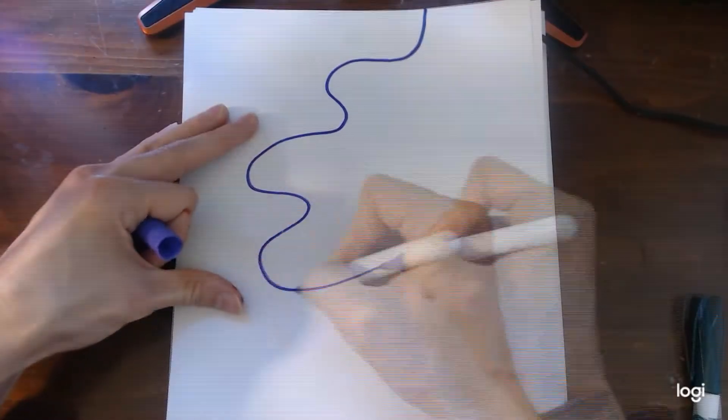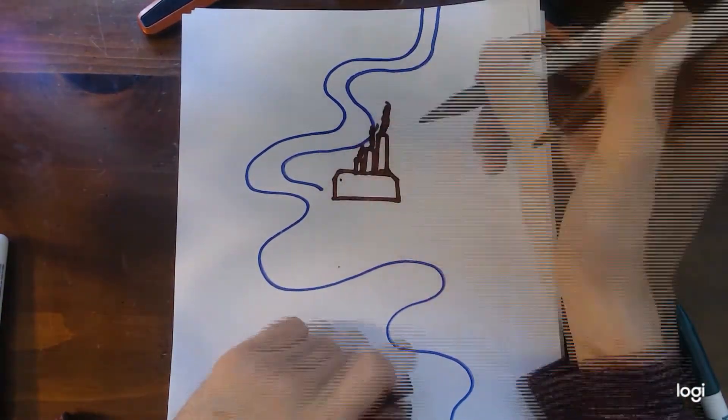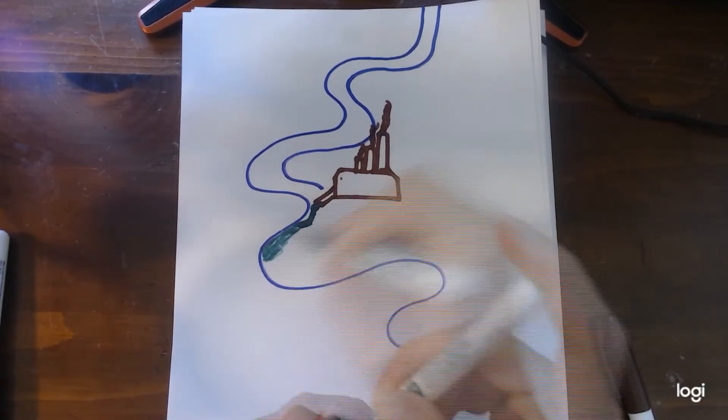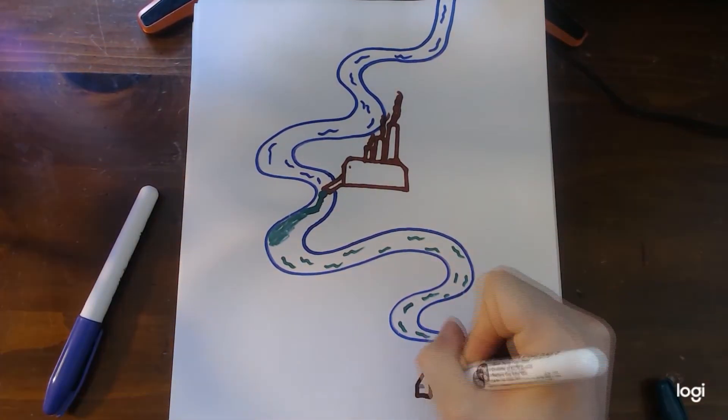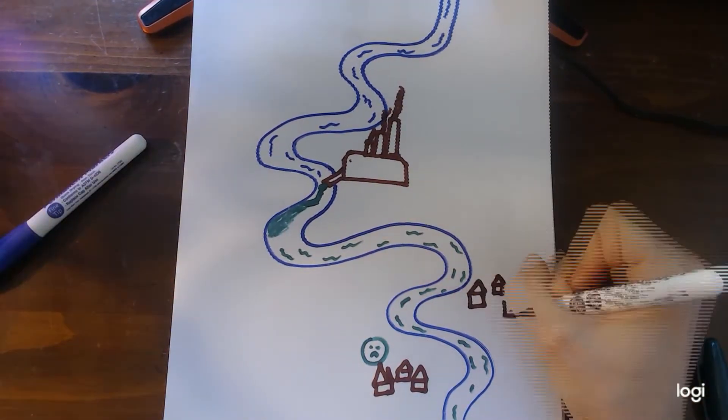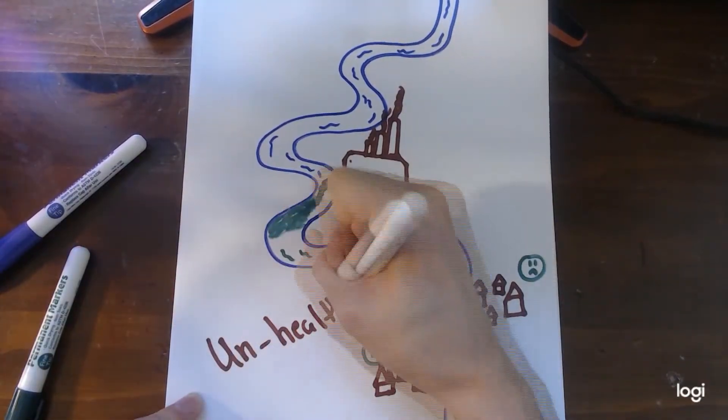Since headwaters are so small and so abundant, it is easy for them to get blocked, destroyed, or polluted due to human activity. Since the water for our rivers begins here, if they are polluted or tampered with, this affects the overall health of the river for everyone.